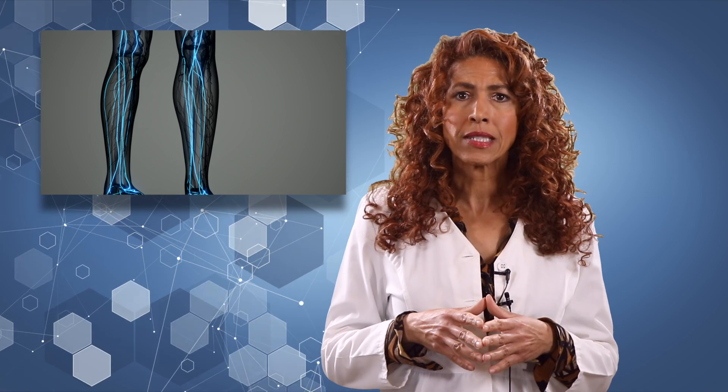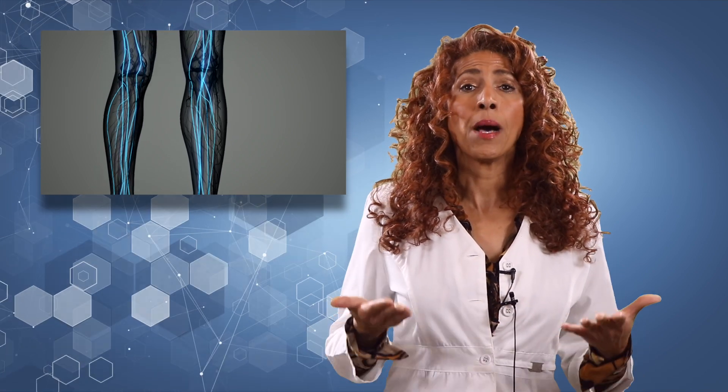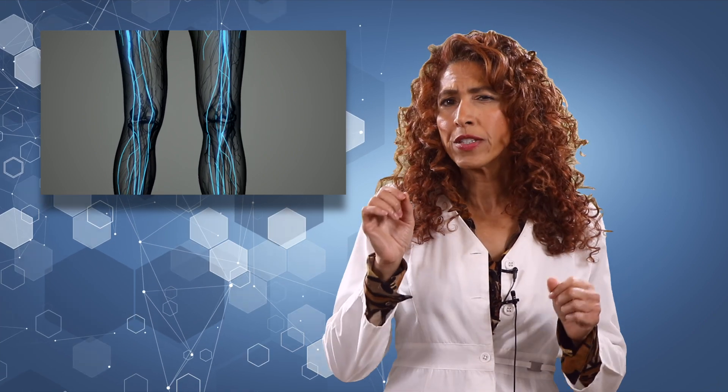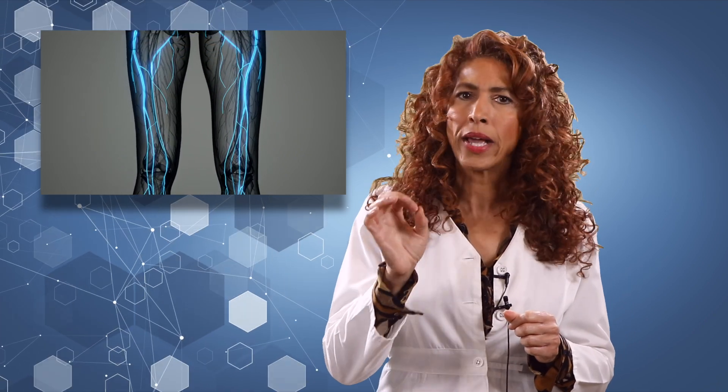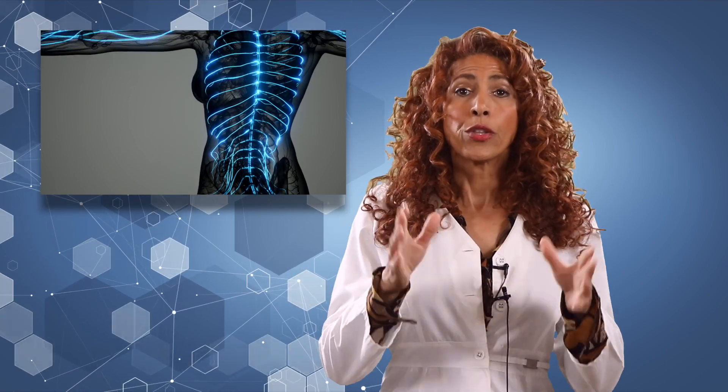Small nerve fiber damage initially begins with symptoms occurring in both feet, usually in the soles. Then as the condition worsens, these symptoms will spread up the leg. As the nerves of the calves are damaged, it's quite common for people to also begin experiencing symptoms that now occur in the hands or in the arms as well.